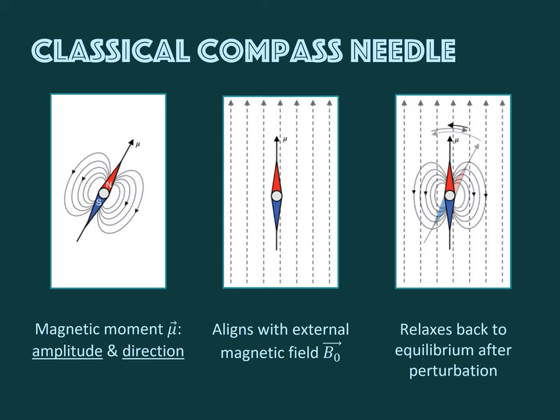You also know what happens when you hit the tip of the needle with your finger and move it out of equilibrium. The needle wants to go back to being aligned with the field, but while doing so it overshoots and swings in the opposite direction. Over time, because there's friction where the needle is mounted, this oscillating movement dampens until the needle comes to rest again.